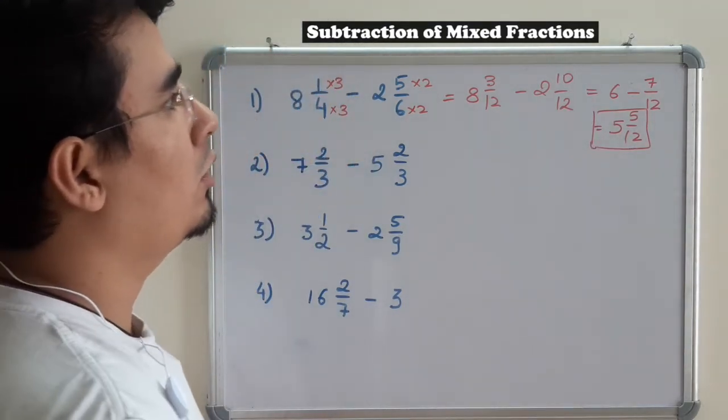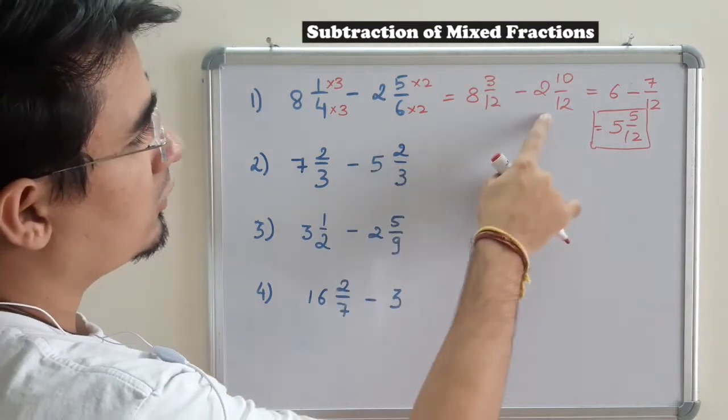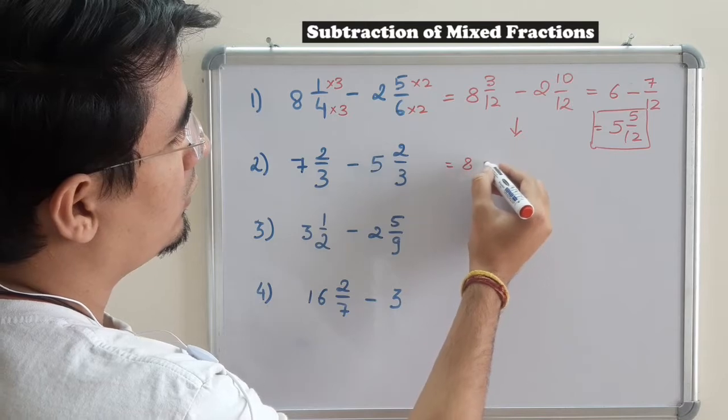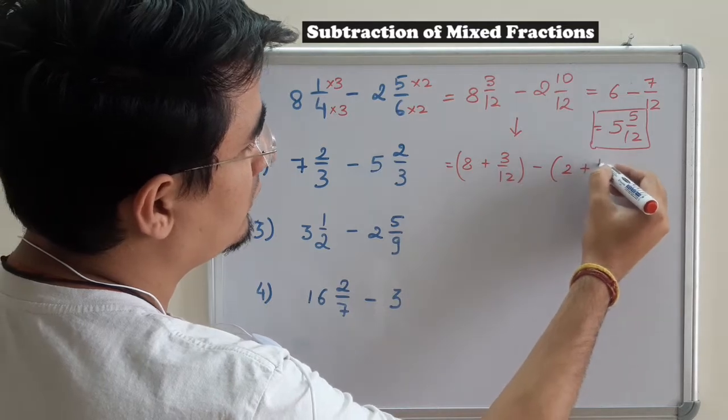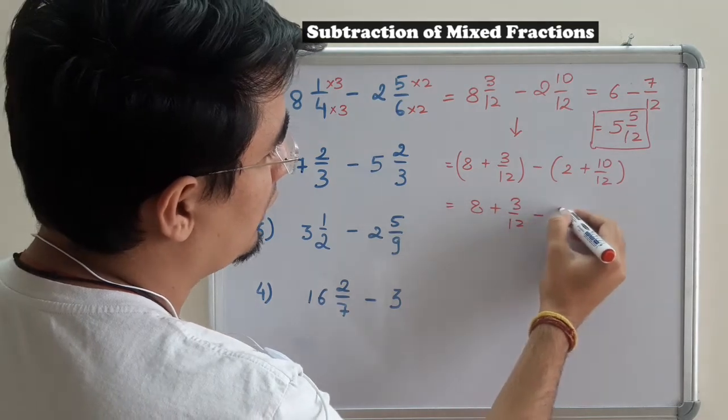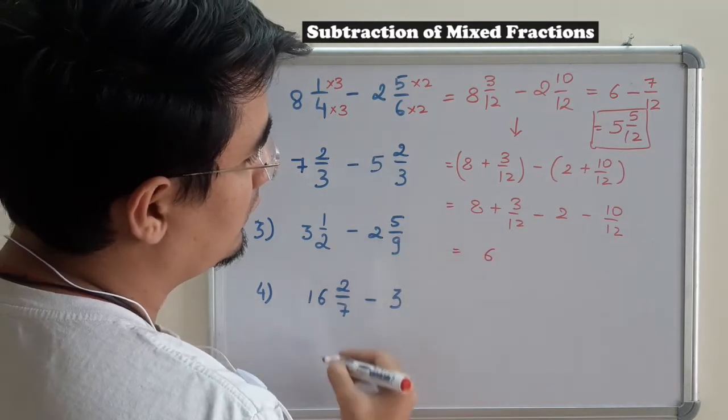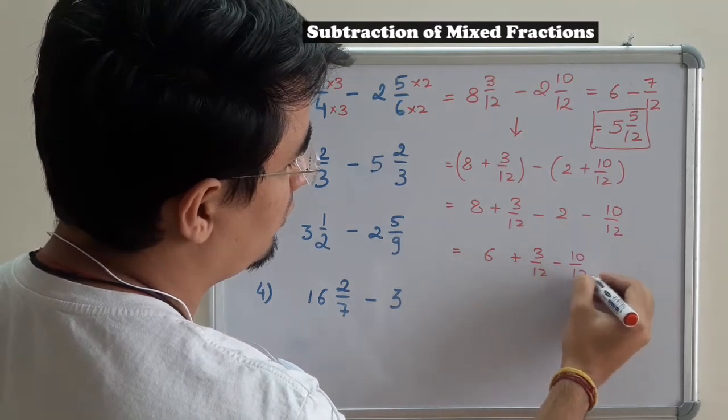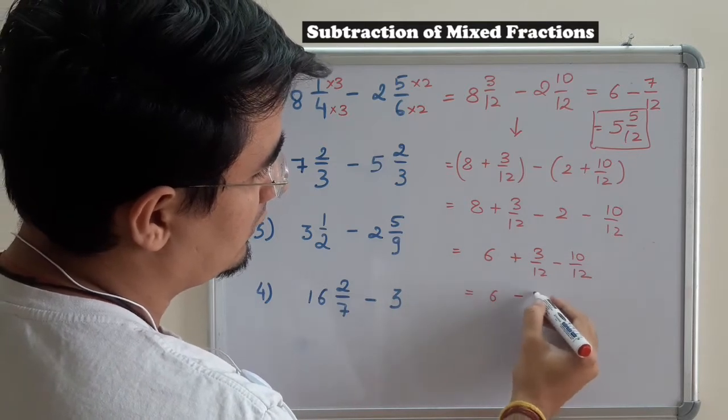Let me show you the long way for this example to explain how it's going. So till this time this is clear - I'm going to show this part. So it is 8 plus 3/12 minus 2 plus 10/12. 8 plus 3/12 minus 2 minus 10/12. Subtracting these two is very easy: 6 plus 3/12 minus 10/12. So I'll be getting 6, this is minus 7/12.